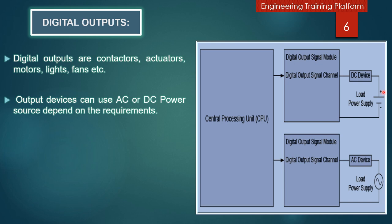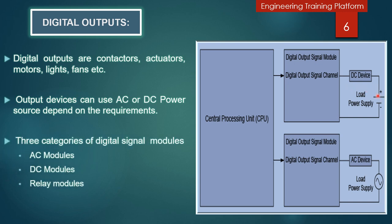Here you can see the connections for the DC load power supply and the AC load power supply. In the previous slide we described how digital input devices connect with the CPU, and now from the CPU to the digital output signal modules — how they connect — and these are the power sources from the output side.